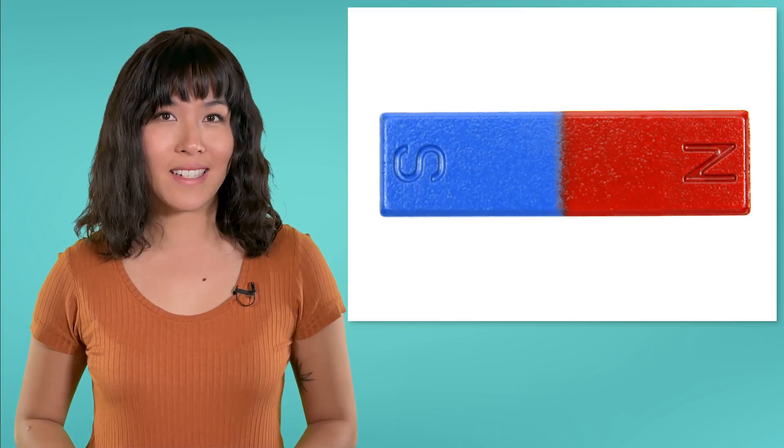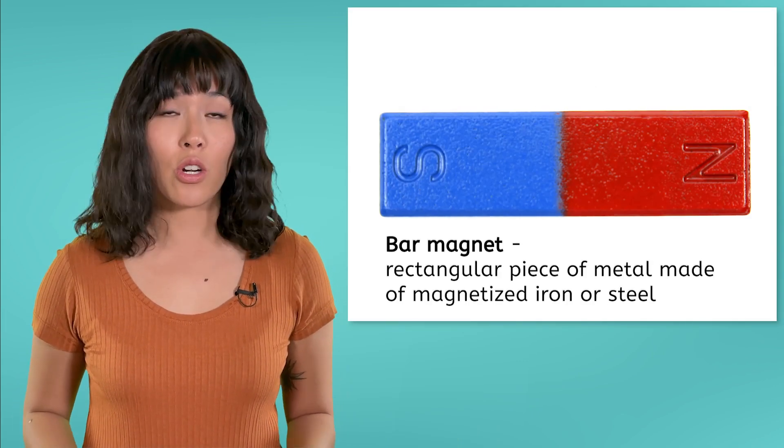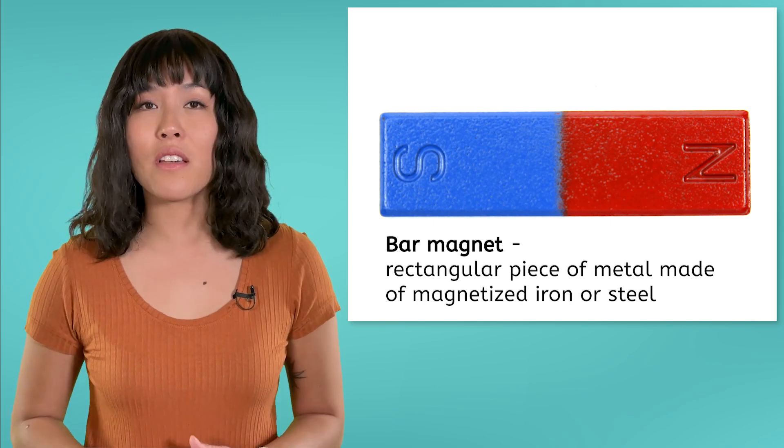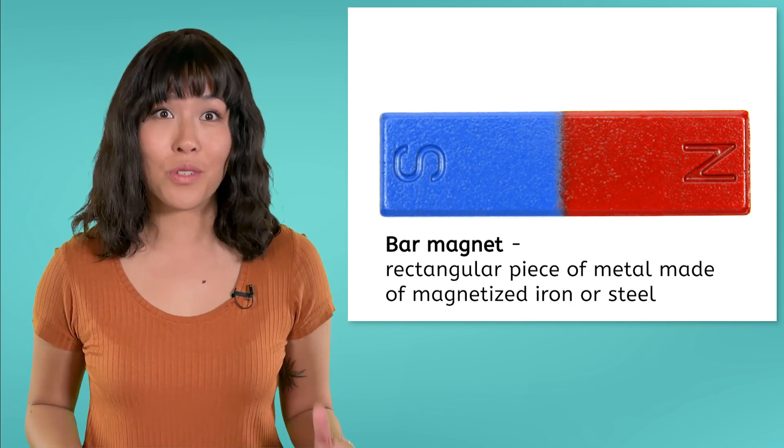Before we can understand the magnetic field of Earth, we need to start with something at a smaller scale: the magnetic field of a simple bar magnet. A bar magnet is a curved or rectangular piece of metal, often made of iron or steel.